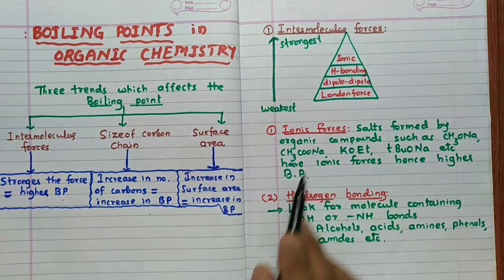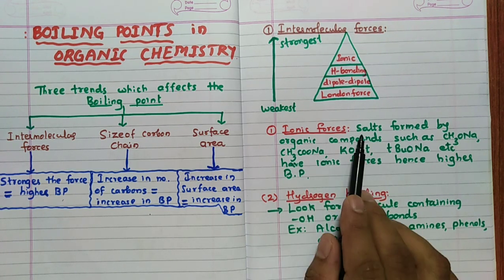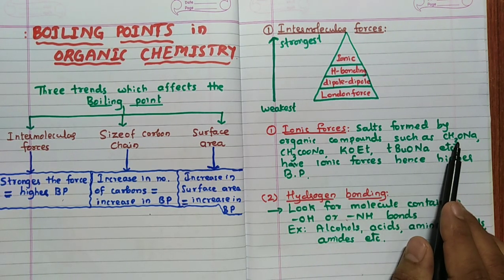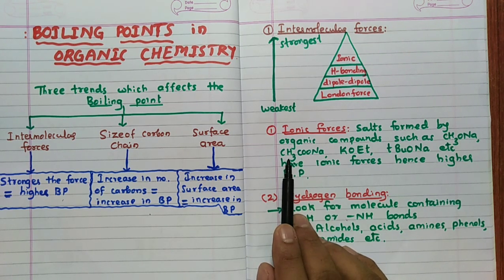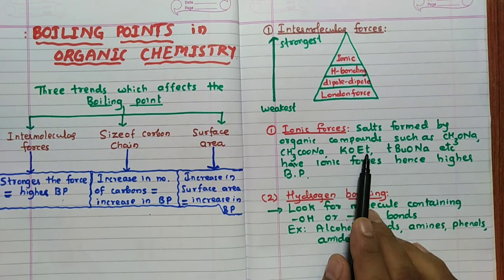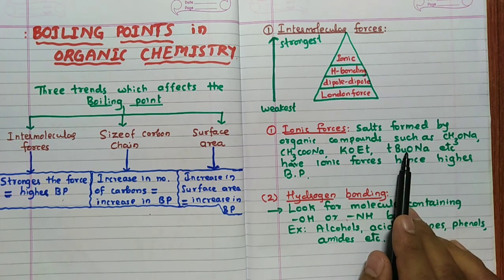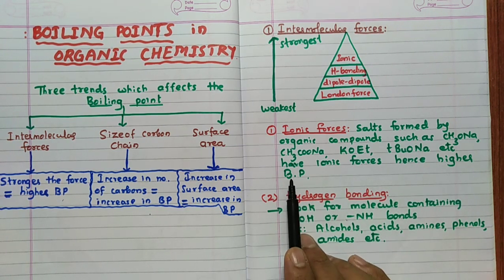Ionic forces in organic compounds are present between salts formed by organic compounds, such as sodium methoxide (CH₃ONa), sodium acetate, potassium ethoxide (KOEt), sodium tertiary butoxide, etc. These have ionic forces and hence their boiling points are the highest.